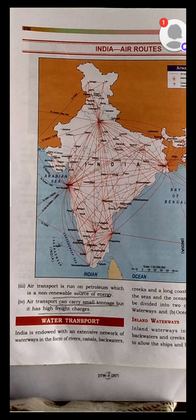About air transport, we had studied that it started between Allahabad and Naini in the year 1911. The Airports Authority of India came into existence on 1st April 1995. Till then, there were 2 major authorities — the National Airports Authority and the International Airports Authority — looking after flights in India.